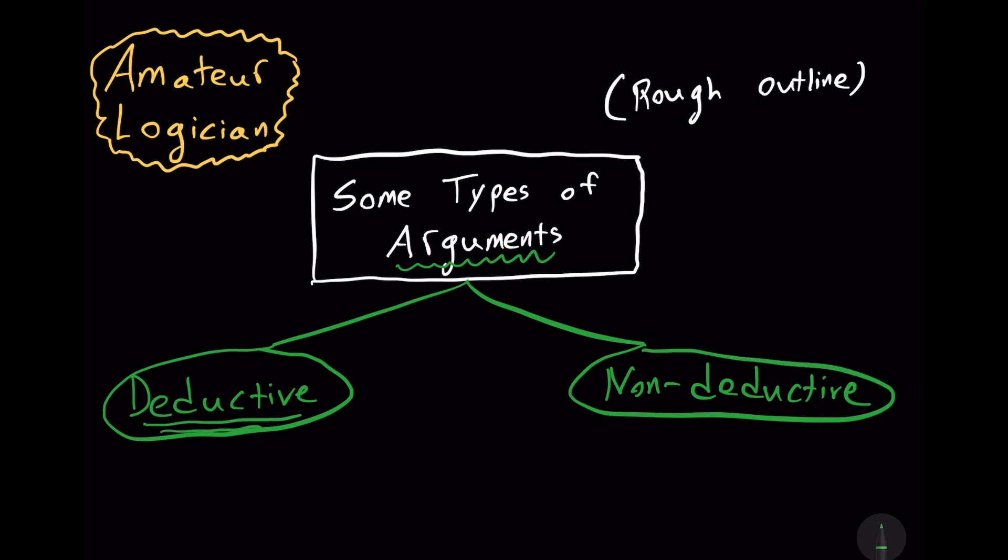A deductive argument preserves truth. In a deductive argument, the premises support the conclusion conclusively. If we have a valid argument, that is to say we follow the laws of logic, insofar as we have true premises, we're guaranteed to get a true conclusion. So in this sense, it preserves truth.